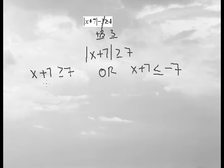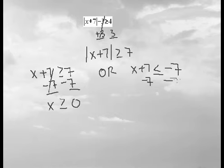We isolate x by subtracting 7 from both sides, leaving us with x is greater than or equal to 0. On the other side we have x is less than or equal to negative 14.